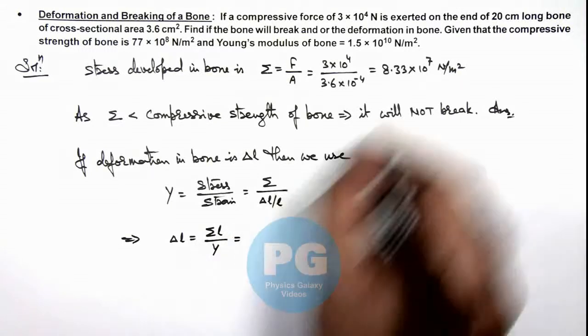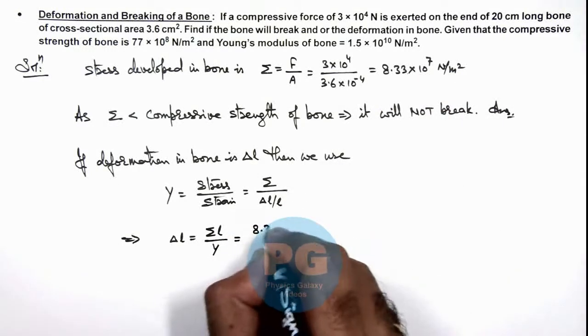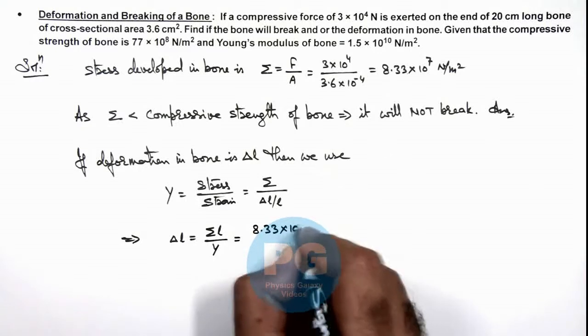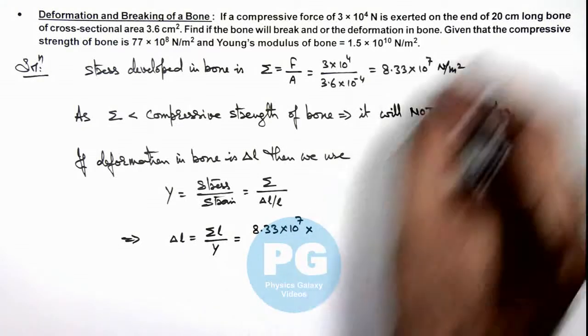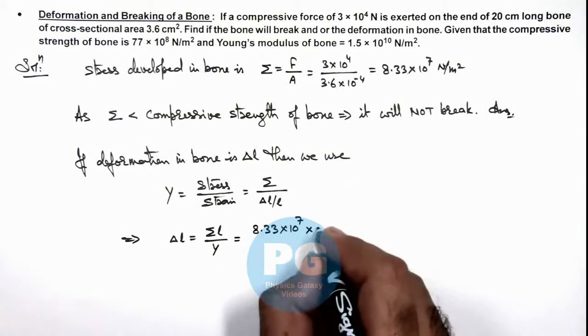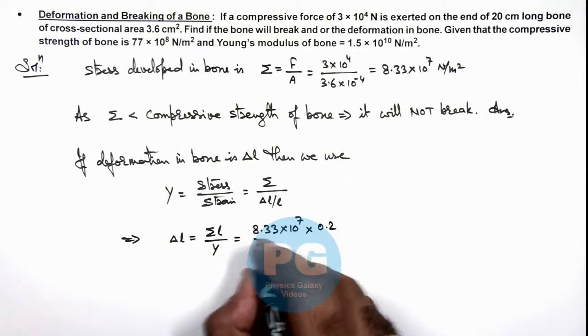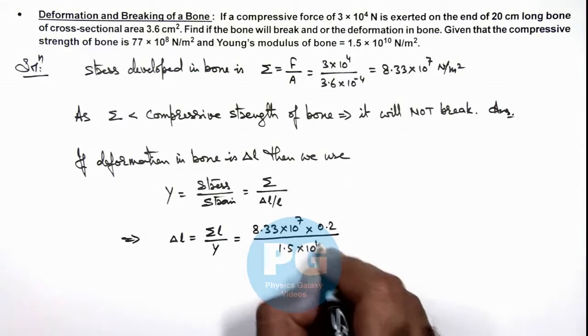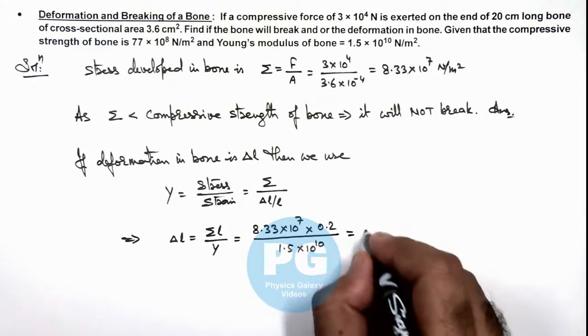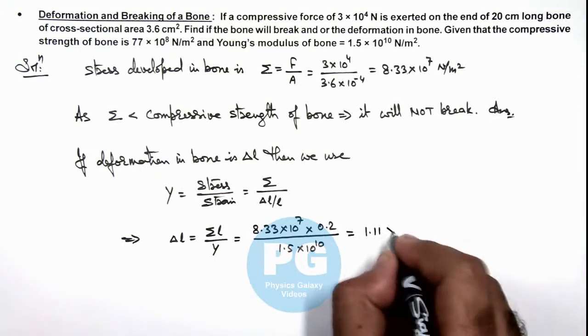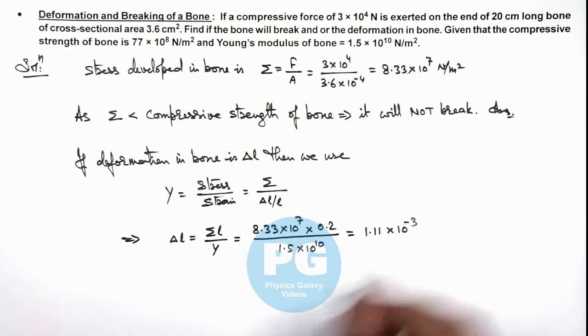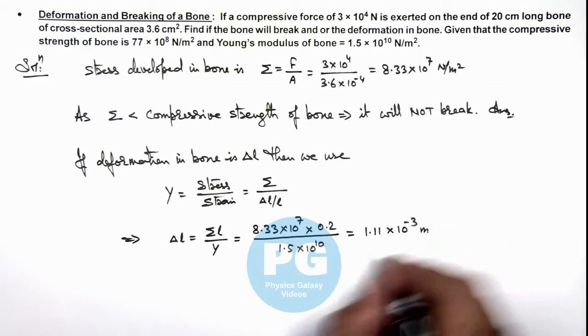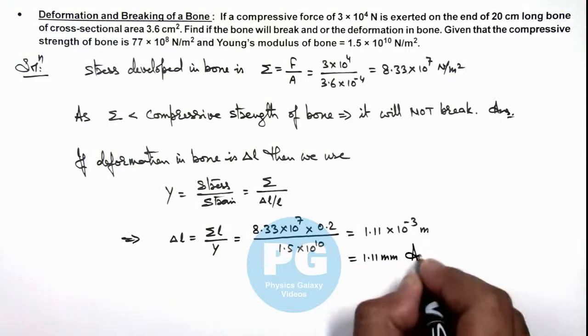Stress we already calculated as 8.33×10⁷ multiplied by length of the bone 20 cm, which is 0.2 m, divided by the Young's modulus 1.5×10¹⁰. If numerically we solve it, this gives us 1.11×10⁻³ m, which is 1.11 mm—that is the result of this problem.